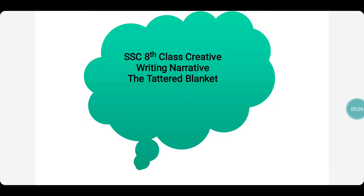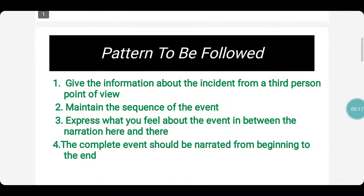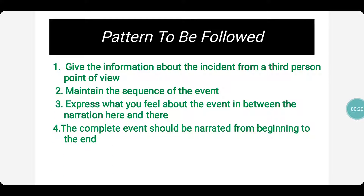Hello children, today let us learn a narrative from the lesson 'The Tattered Blanket' from Unit One, Part A. To write a narrative, follow this pattern: give information about the incident from a third person point of view, maintain the sequence of events, and express what you feel about the event in between the narration — incident, feeling, incident, feeling — that is how you are going to narrate.